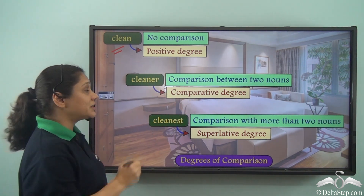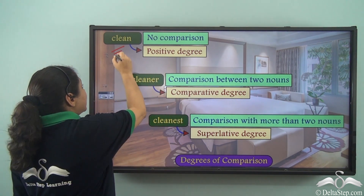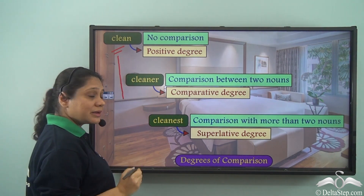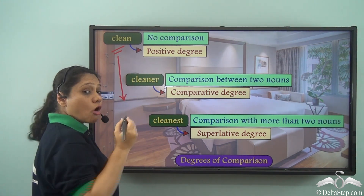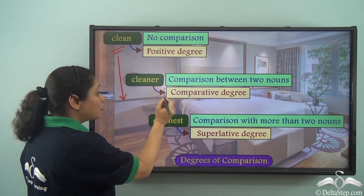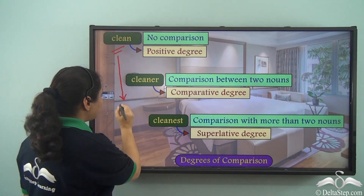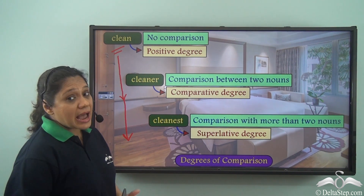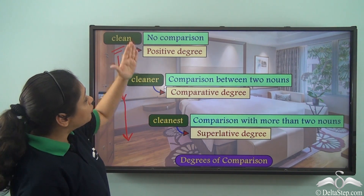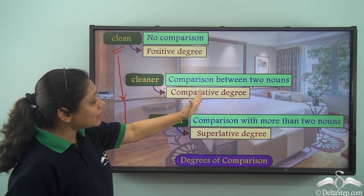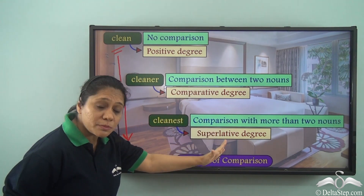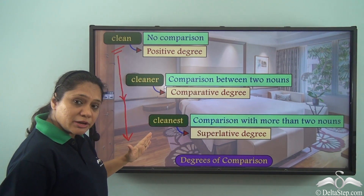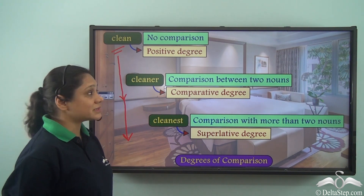As we move from the positive degree to the comparative degree, the intensity of the degree of comparison increases. It also increases as we move from the comparative degree to the superlative degree. So as we move from the positive degree to the comparative degree to the superlative degree, the intensity of the degree of comparison increases.